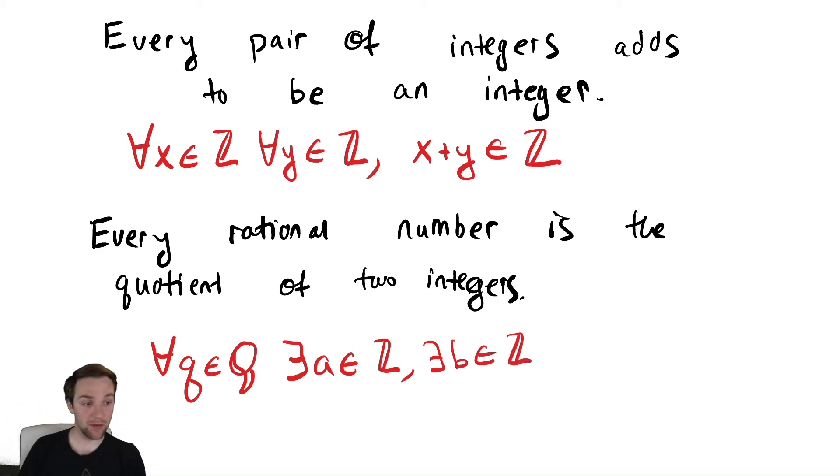I did something slightly different here. And it is a preference thing. I wrote a comma after that there exists. You're allowed to write commas after these if you want to. You don't need to. But if I'm going to do that, I should probably write them everywhere. So you could say for all, comma, there exists, comma, there exists. So it says for every rational number, there's these two integers, a and b.